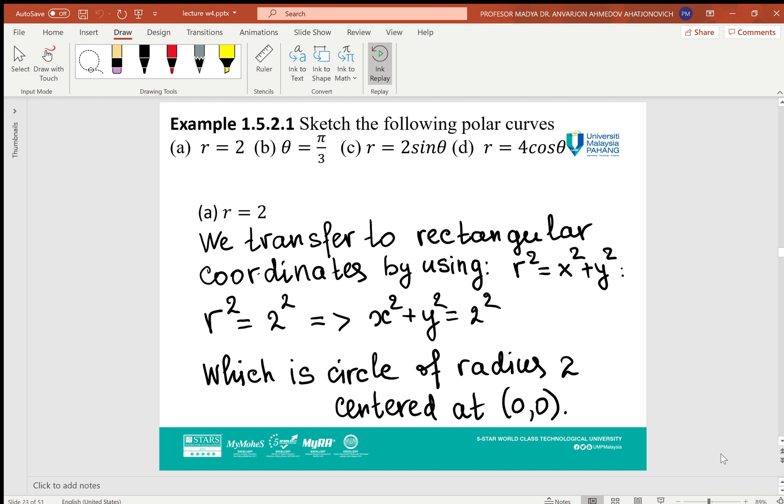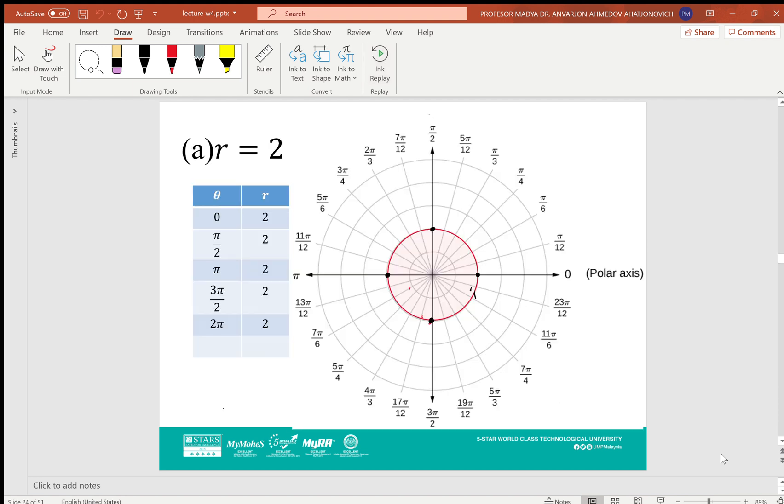First, I put the values of θ and r in a table. We assume that r depends on θ, and for various values of θ, how will r change? For example, θ takes the values 0, π/2, π, 3π/2, and 2π—this is one whole rotation from 0 to 2π.